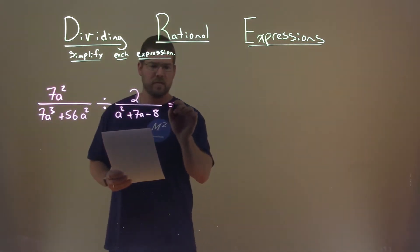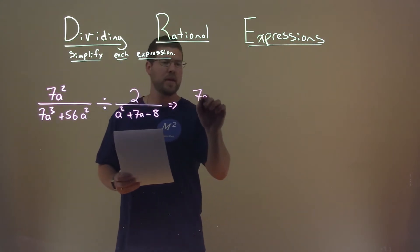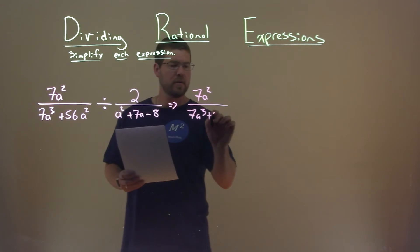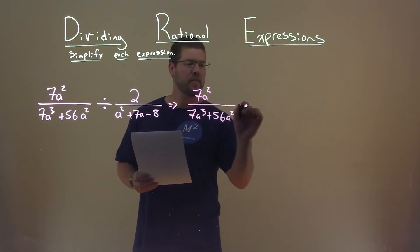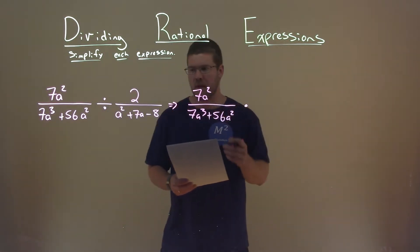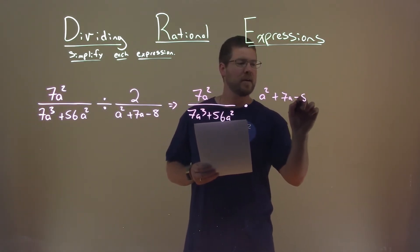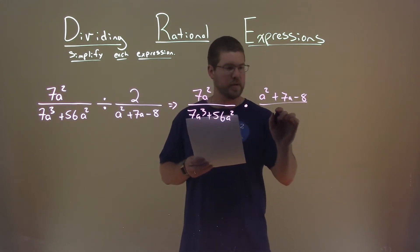Well, I'm going to rewrite this to be a multiplication problem. So we take our 7a squared over 7a to the third plus 56a squared, and instead of dividing, we're going to multiply and flip the second fraction. a squared plus 7a minus 8 goes to the numerator, and the denominator is just 2 here.